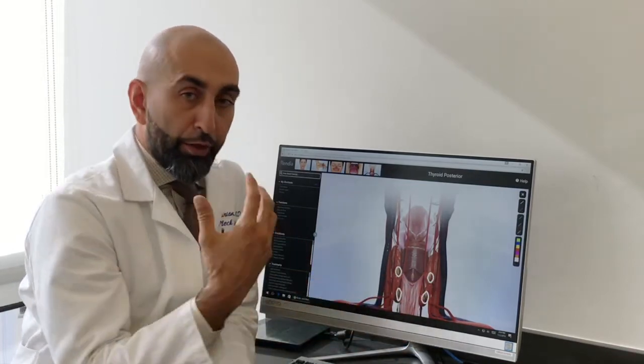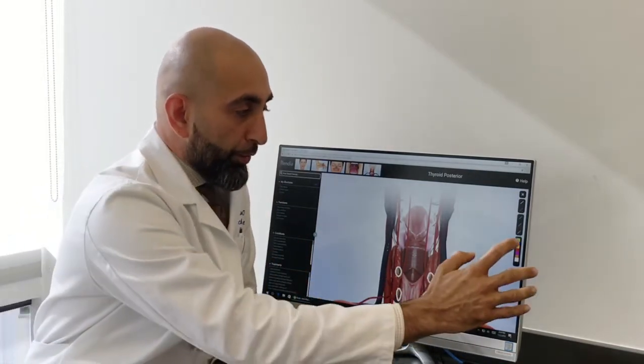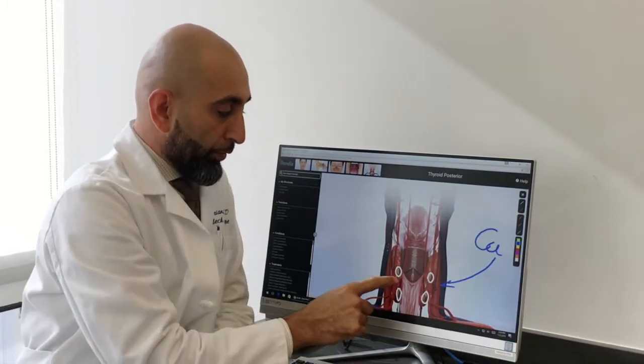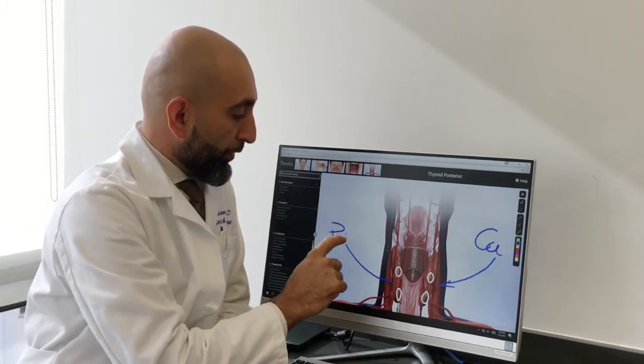This is the only gland that you have four copies of. All these glands do is look at the level of calcium in the blood and in response to it produce the hormone PTH.